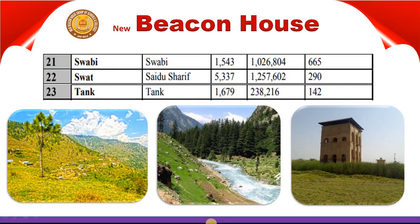The twenty-first district is Swabi. Its headquarter is also in Swabi. It has an area of 1,543 km². The population is 1,026,804 and its density is 665 people per km². The twenty-second district of Khyber Pakhtunkhwa has its headquarter in Saidu Sharif and an area of 5,337 km². It has a population of 1,257,602 and a density of 290 people per km².